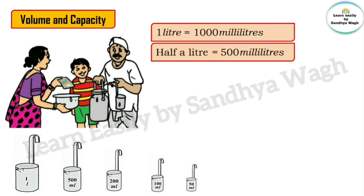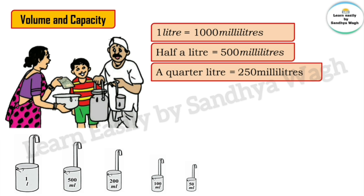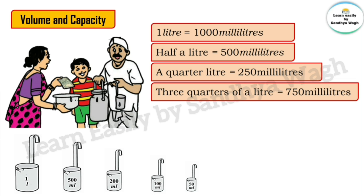A quarter litre equals 250 millilitres. Three quarters of a litre equals 750 millilitres.